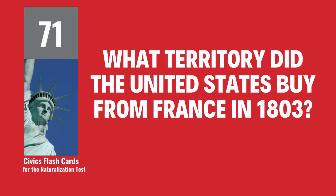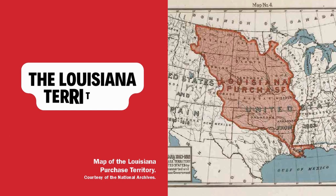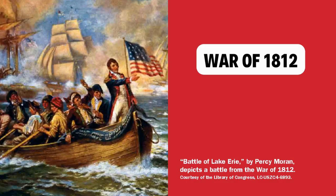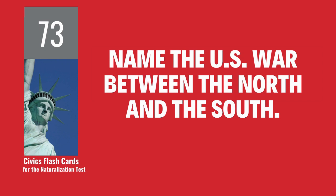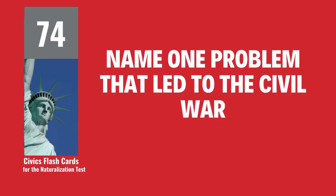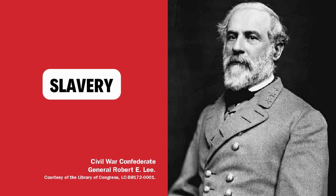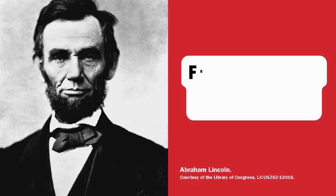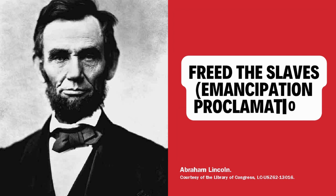What territory did the United States buy from France in 1803? The Louisiana Territory. Name one war fought by the United States in the 1800s. War of 1812. Name the U.S. war between the North and the South. The Civil War. Name one problem that led to the Civil War. Slavery. What was one important thing that Abraham Lincoln did? Freed the slaves, Emancipation Proclamation.